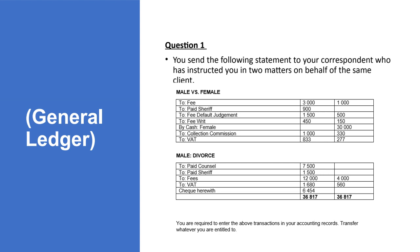As you can see here, the question says you sent the following to your correspondent who has instructed you in two matters on behalf of the same client. We need to account this information in the books of accounts. Remember, you are the instructed attorney — not the instructing attorney. You have been instructed, so you perform on behalf of the instructing attorney, and you gave the results. Those results need to be recorded in your accounts so you can track your fees and recover whatever you paid during the whole process.